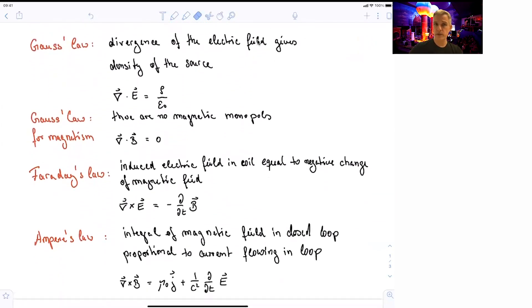So you can write Maxwell equations in four different equations. The first one is called Gauss's law. And if you read the equation, it just says that the divergence of an electric field gives the density of the source or the charge density of the source. You can also read this equation by saying a charge density generates an electric field. So charges generate electric field.